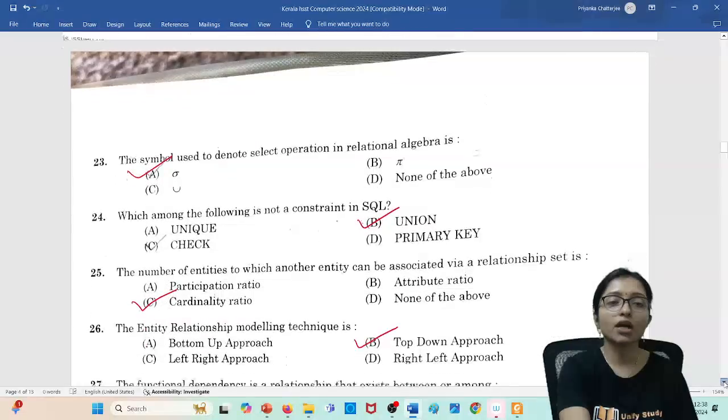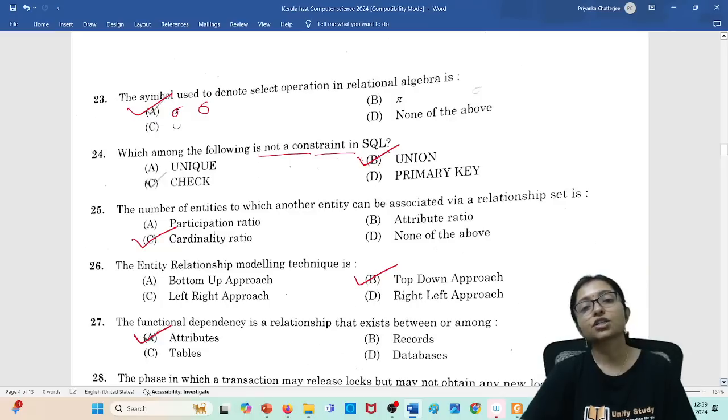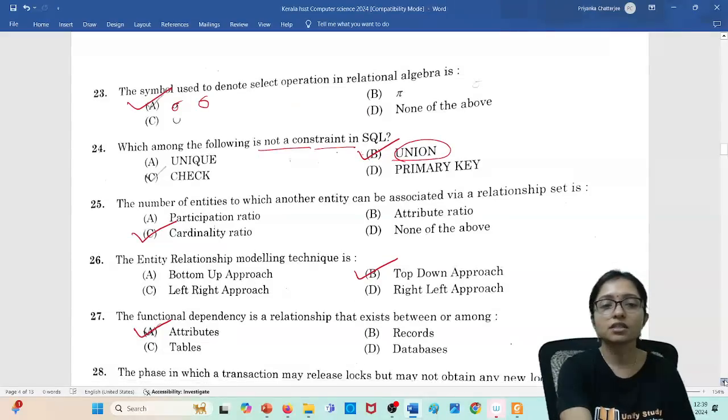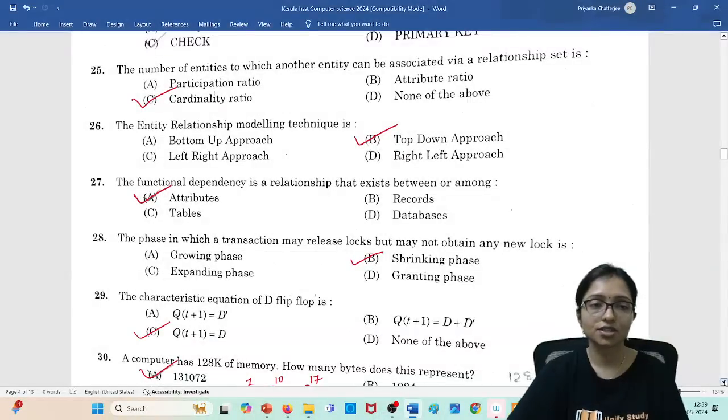The symbol used to identify the select operation, that is this one. This one is actually the select operation. Which of the following is not a constraint of SQL? There are different constraints: union, check, primary key. These all are constraints, but union is an operation, not a constraint. So that's why this is your answer. Not is very important in each and every question.